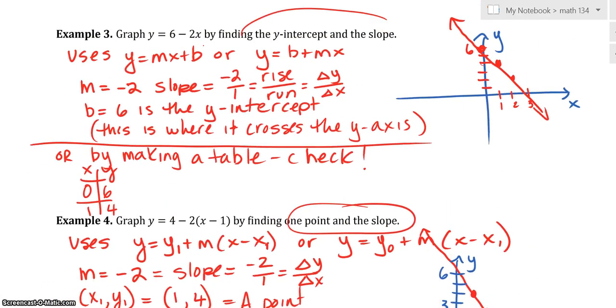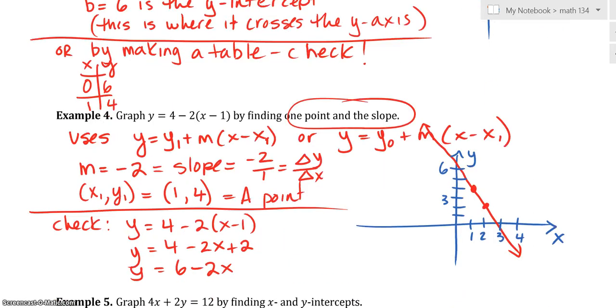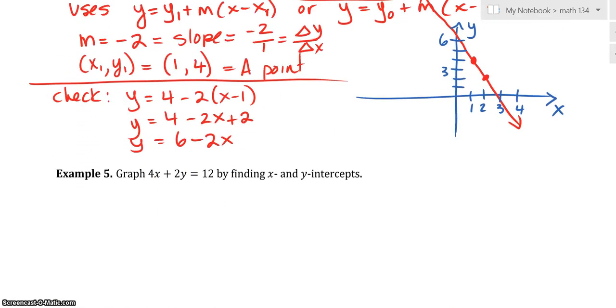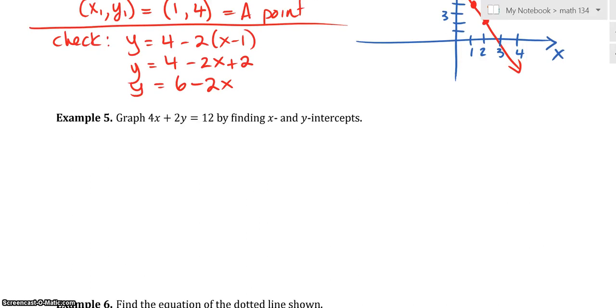This one is called point-slope form. This one is called slope-intercept form. This one, there's really no form for it.